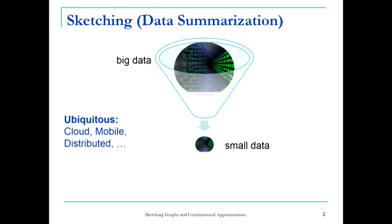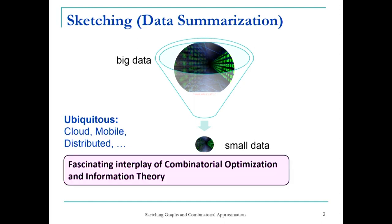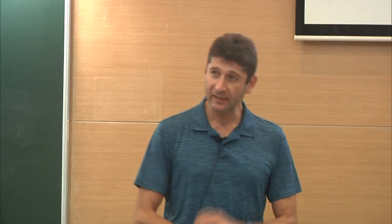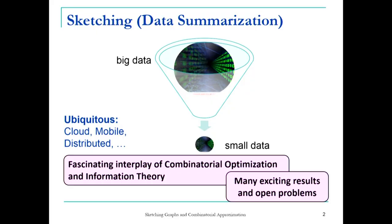You have a lot of data and you want to somehow get a smaller image — somehow summarize the data in a useful way, depending on what you want to use it for. This concept in its generality appears in many, many applications. The reason I'm interested in this is basically the fascinating interplay between the combinatorial optimization problems you want to solve and something like information theory — how much information about the object you need.